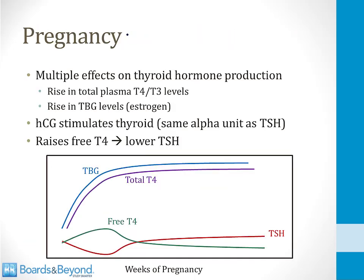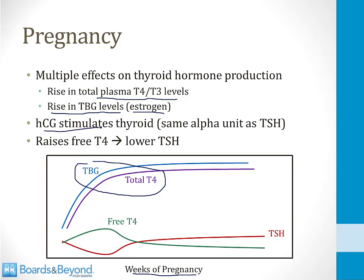Pregnancy has multiple effects on thyroid hormone production. Estrogen raises TBG levels, increasing total plasma T4 and T3, as shown on the chart where TBG and total T4 climb with weeks of pregnancy. Additionally, HCG — which shares the same alpha subunit as TSH — stimulates the thyroid, raising free T4 slightly, especially early in pregnancy, which causes a corresponding fall in TSH early in pregnancy. As pregnancy progresses, this HCG-driven effect wanes.